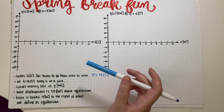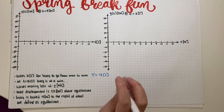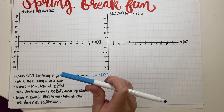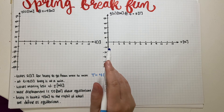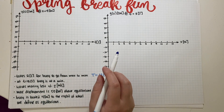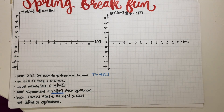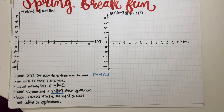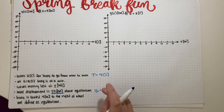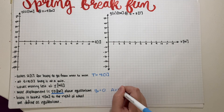At t = 10 seconds the buoy is at a minimum. The maximum displacement is 50 centimeters. Ocean level is our zero, so the equilibrium position y₀ = 0, and the amplitude is equal to 50 centimeters.